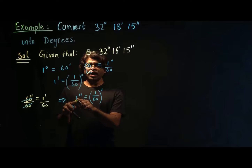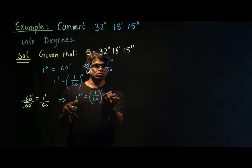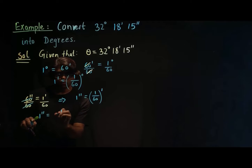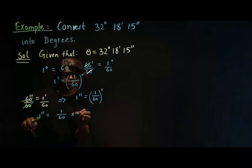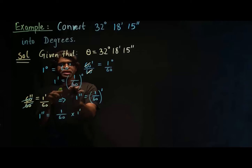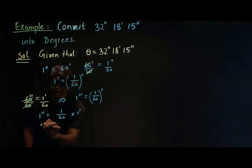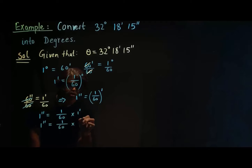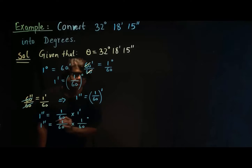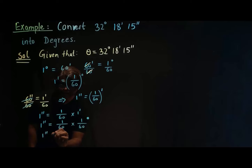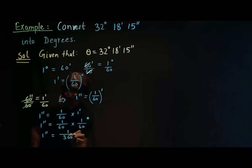If I want to find the relation between seconds and degrees, I can write one second is equal to one over 60 times one minute. And we know that one minute is one over 60 degrees, so I can substitute that value and write one second is equal to one over 60 times one over 60 degrees. Simplifying, one second is equal to one over 3600 degrees.